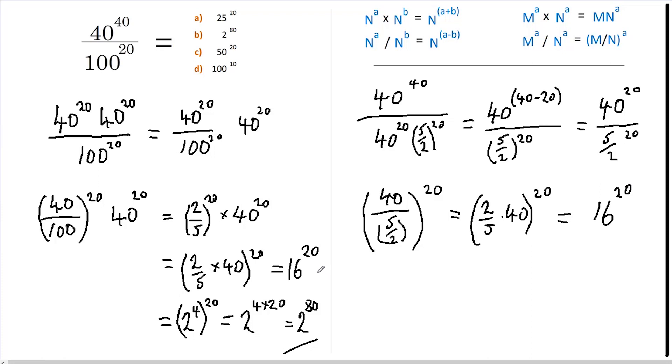Which is the same as we had here, so this does equal 2 to the 80, and that's it. So just to recap, when you have different bases and different powers, you can either change it so that all the powers are the same, or you can change things so that the bases are the same. Either way you get the same answer.